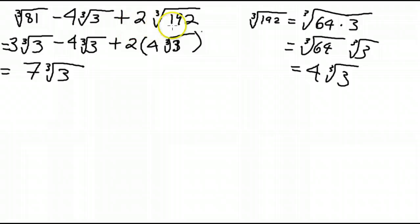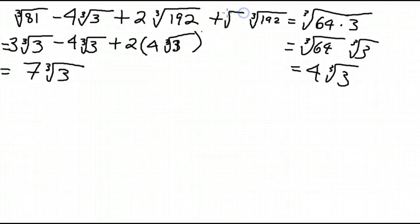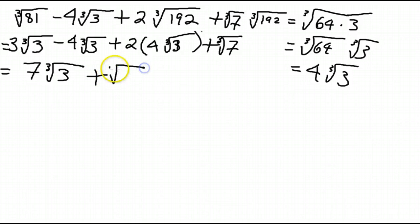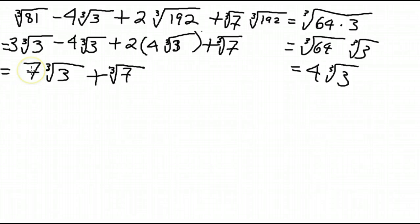So convert from entire radicals to mixed radicals, leave the mixed radical as is, convert the entire radical to mixed, and collect the like terms. If we had, say, plus cube root 7, that would just be along for the ride — it would appear in the answer as cube root 7, because it's not a like term. We can't combine the cube root 3 terms with the cube root 7 term. This expression just is what it is.